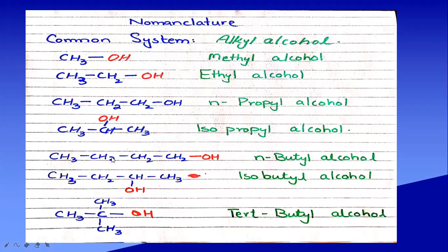The third example is four carbon atoms with one hydroxyl group attached to carbon number one — this is known as N-butyl alcohol. If the hydroxyl group is attached to the second carbon, this is known as isobutyl alcohol. And if the hydroxyl is attached to the carbon atom which is tertiary in nature, this is named tertiary butyl alcohol in the common system. So butyl alcohols exist in three isomeric forms in the common system.